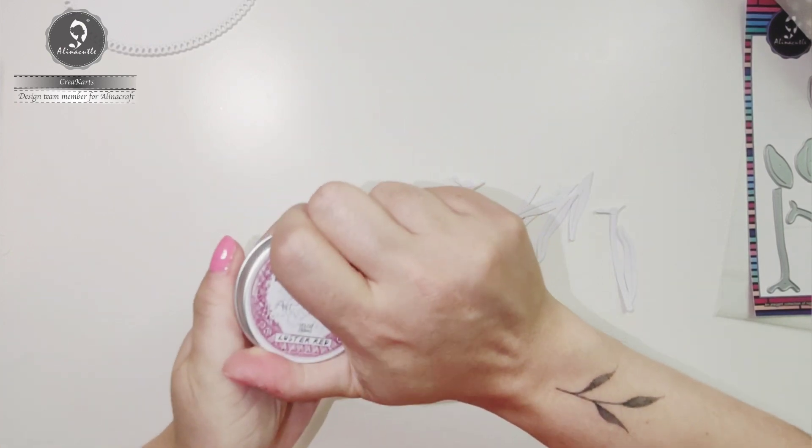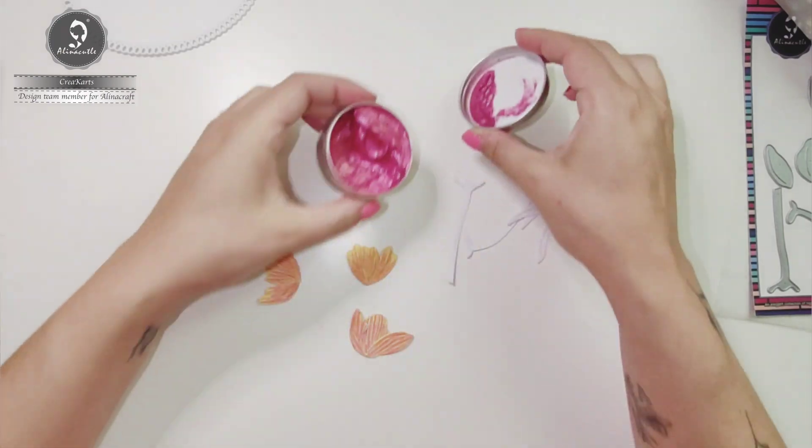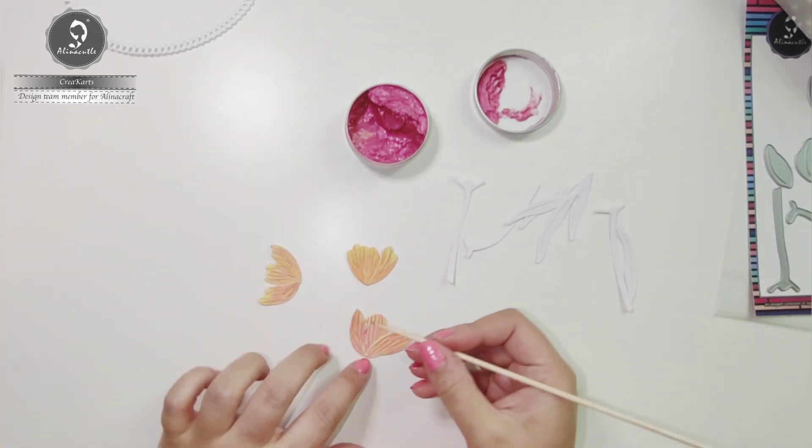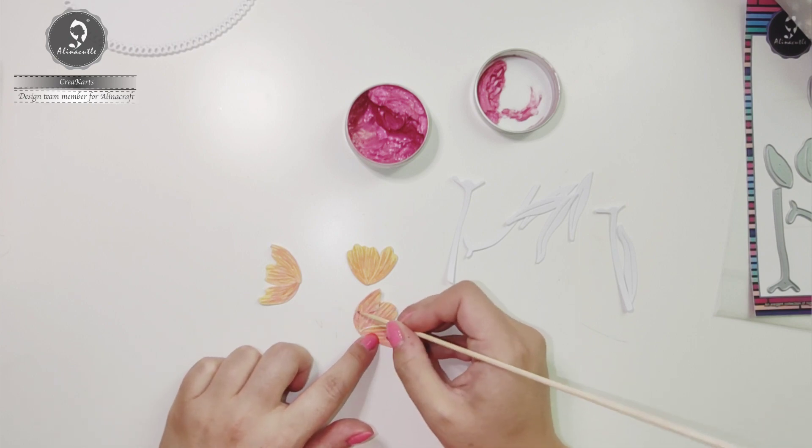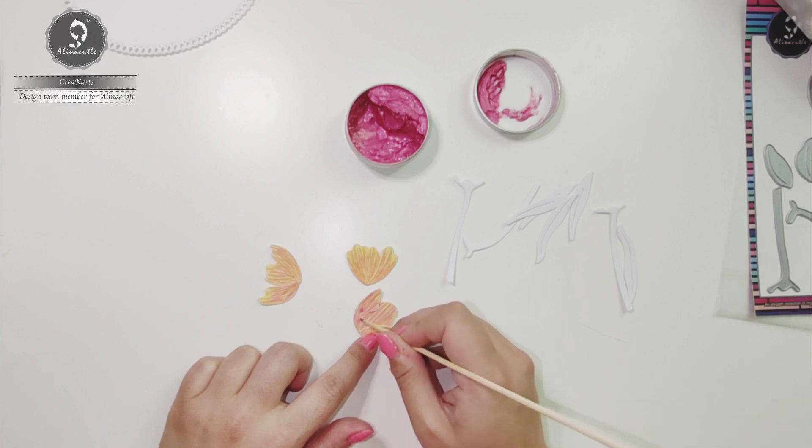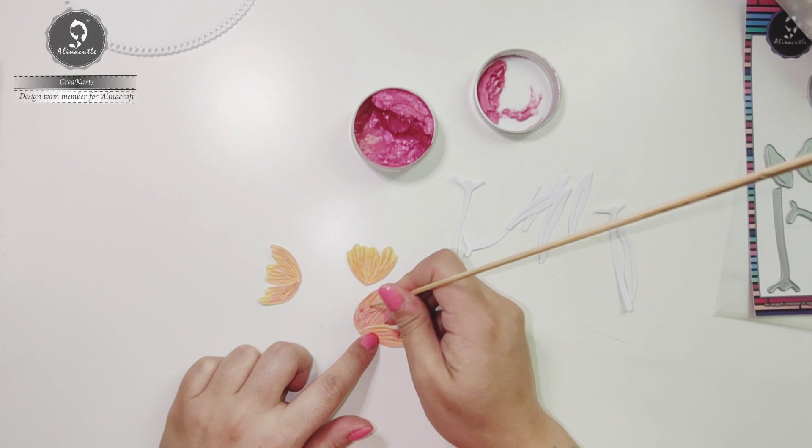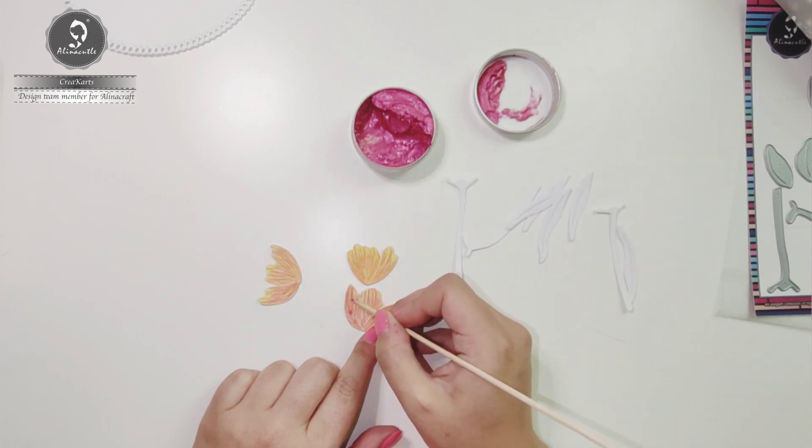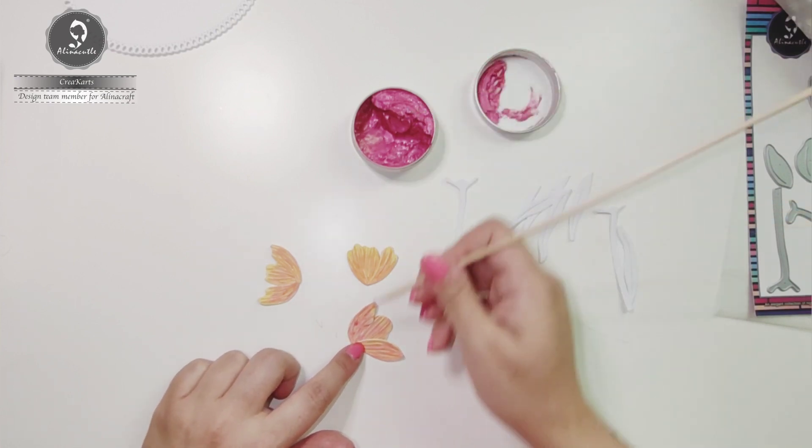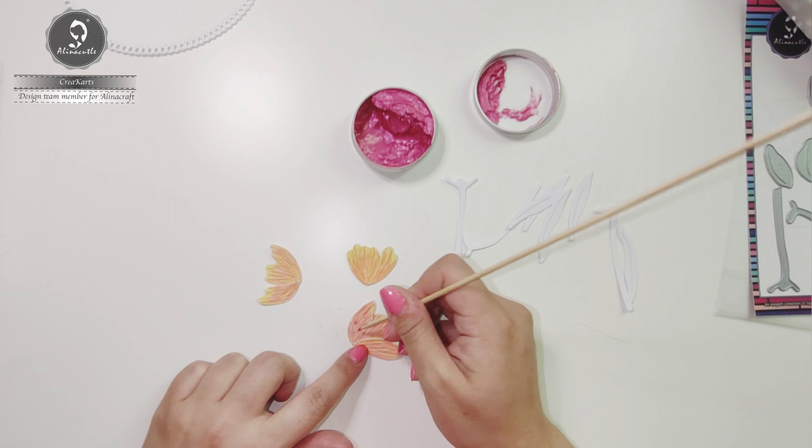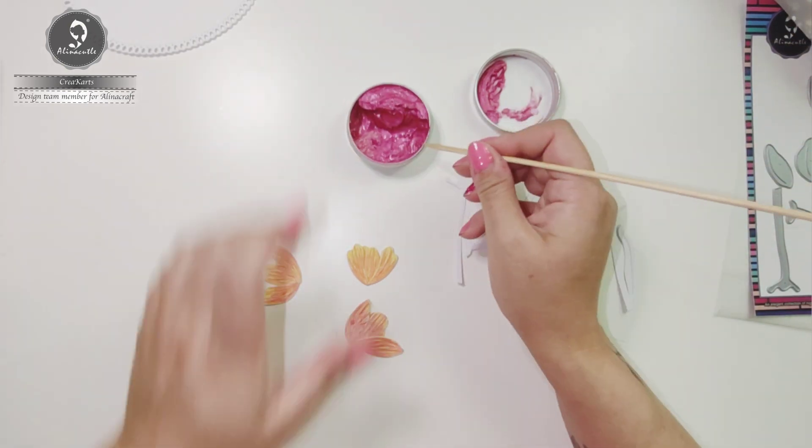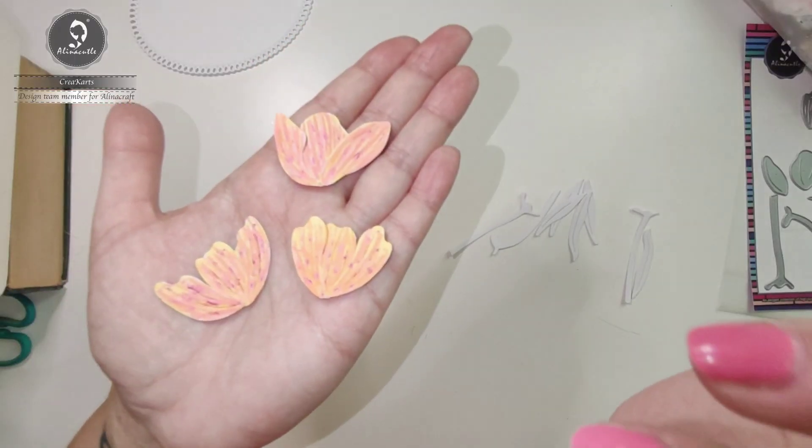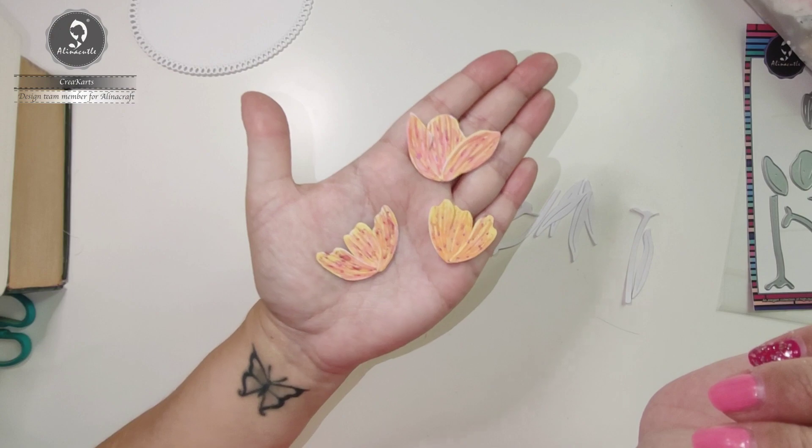And now I'm going to add some metallic paste wax. I'm going to use this wooden skewer to add a little bit at a time. I hope you can see a little bit of the shine from the wax paste.